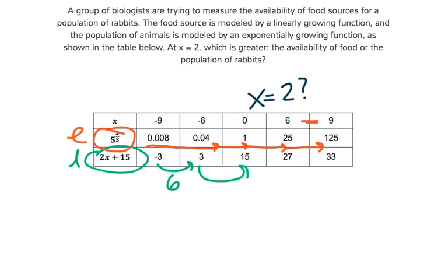Then we go from 3 to 15, which is another pretty big jump. Then we go from 15 to 27, and from 27 to 33.